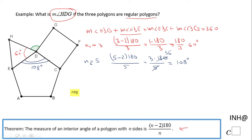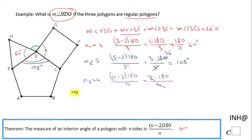We have one more angle to find: angle CDG. That polygon has four sides, so n = 4. Using the formula: (4 − 2) × 180 ÷ 4 = 2 × 180 ÷ 4. Simplifying: 180 ÷ 2 = 90 degrees. That is a 90 degree angle. Now we can go back to the original statement.